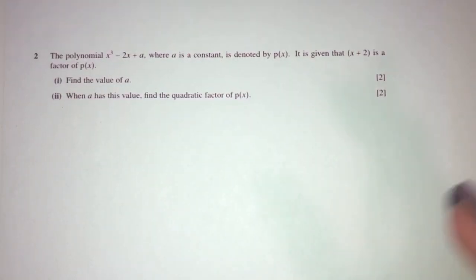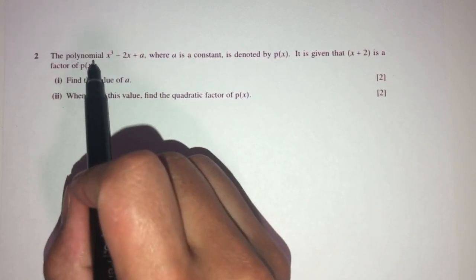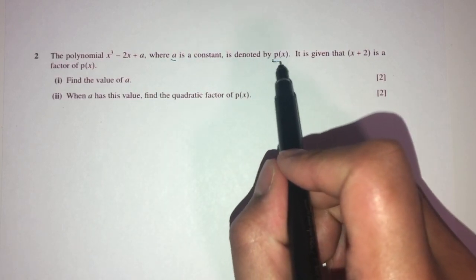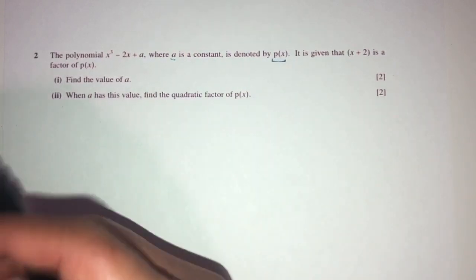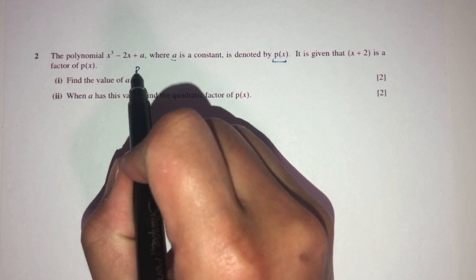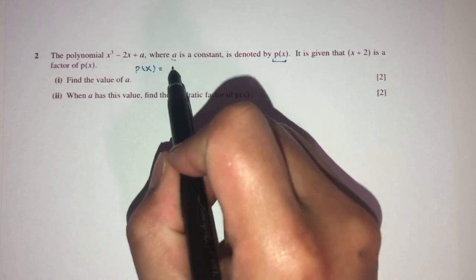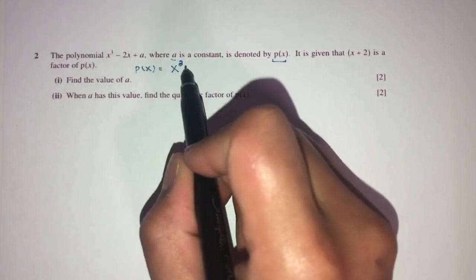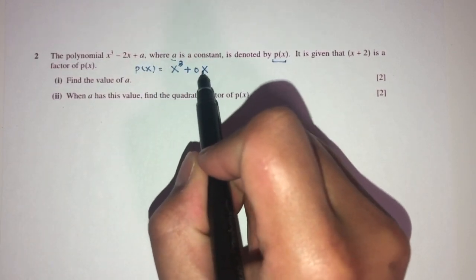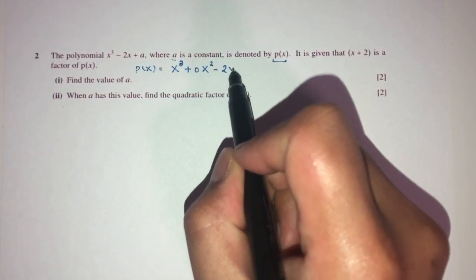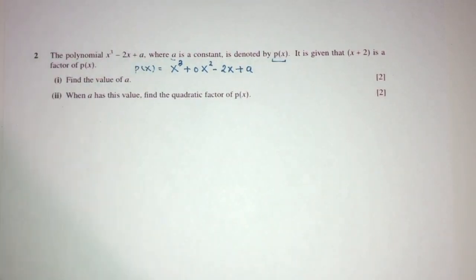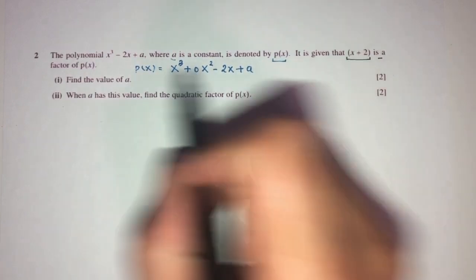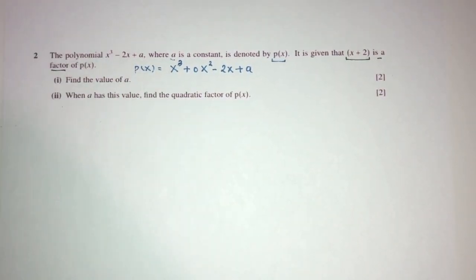Now let's move on to question number two. We have a polynomial where a is a constant, called p(x). Let me write this down: p(x) = x³ + 0·x² − 2x + a. We don't have an x² term so we write +0x² as a placeholder.